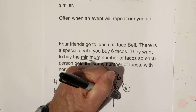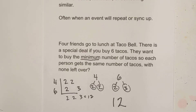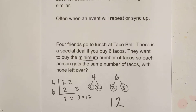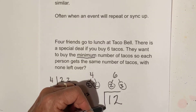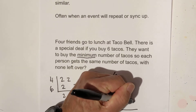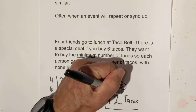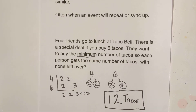You don't have to use a factor tree, but you will need to find the lowest common multiple. Now we know the lowest common multiple is twelve. So what they need to do so everybody gets an equal amount is buy two of the deals. Remember, it's buy six tacos — they buy two deals and will have twelve tacos.